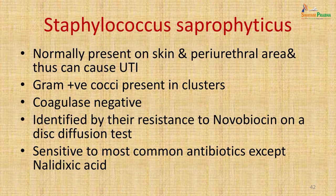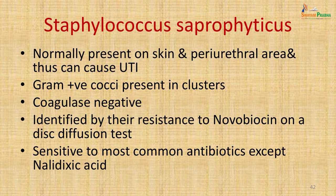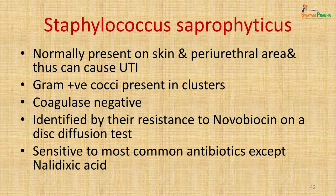Apart from Enterococci, Staphylococci can also cause UTI — specifically coagulase-negative staphylococci present on the skin around the urethra, particularly Staphylococcus saprophyticus. It is a gram-positive cocci in clusters, coagulase-negative. It is identified from other coagulase-negative staphylococci by its resistance to novobiocin on a disc diffusion test. It is sensitive to most common antibiotics except nalidixic acid used for UTI.